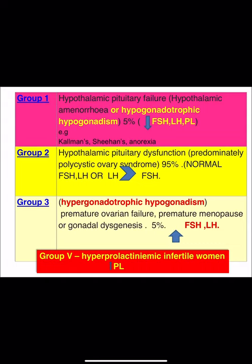Group 3 is hypergonadotrophic hypogonadism — elevated FSH and LH — representing 5% of anovulation cases. Examples include premature menopause, premature ovarian failure, and gonadal dysgenesis. We can also add Group 4: anovulation due to hyperprolactinemia, which is another cause of anovulation.